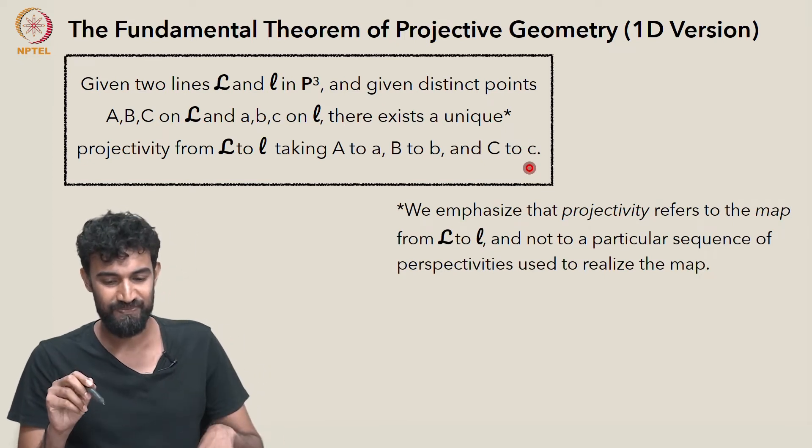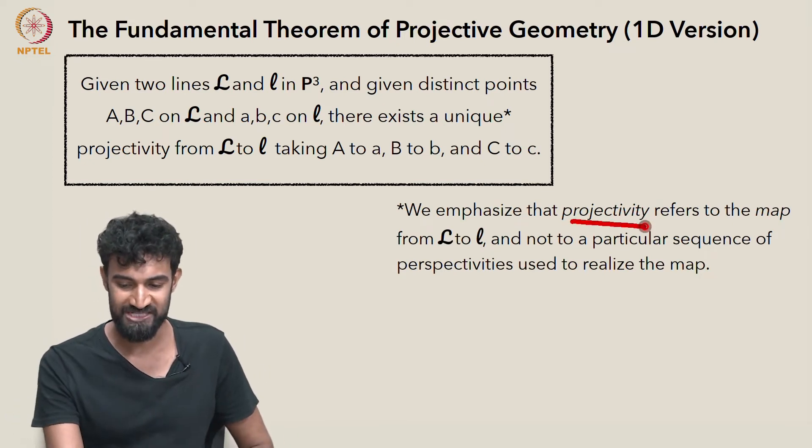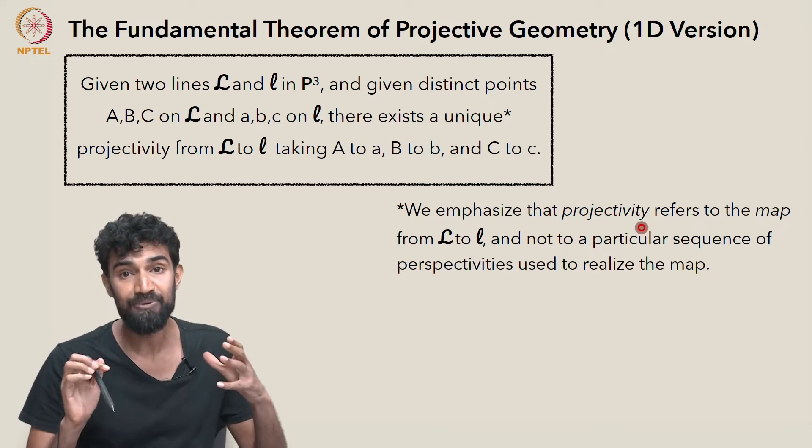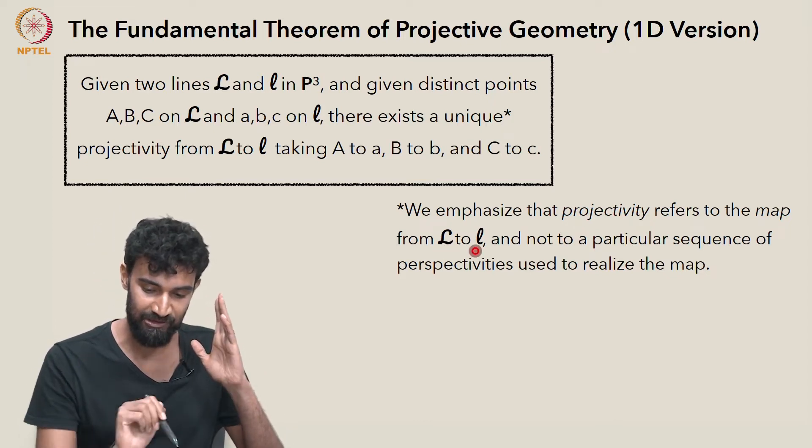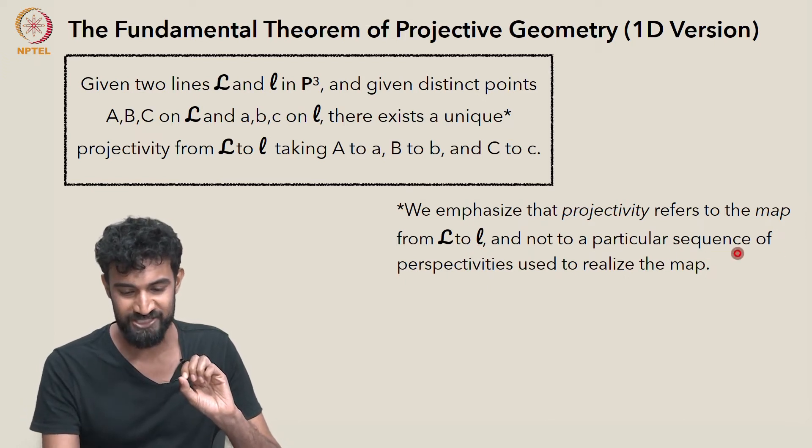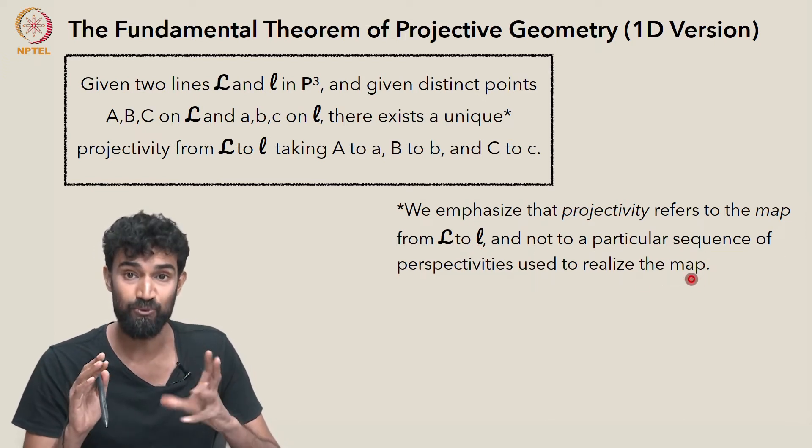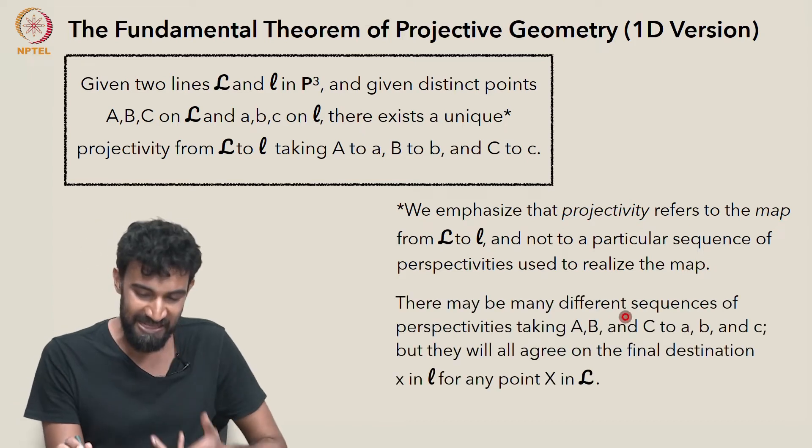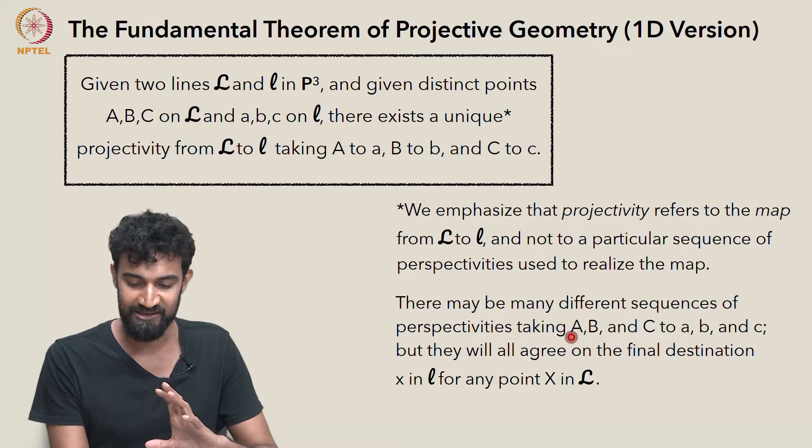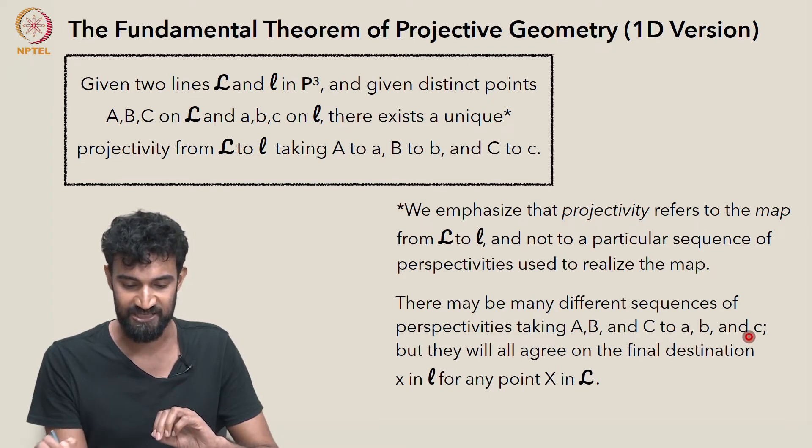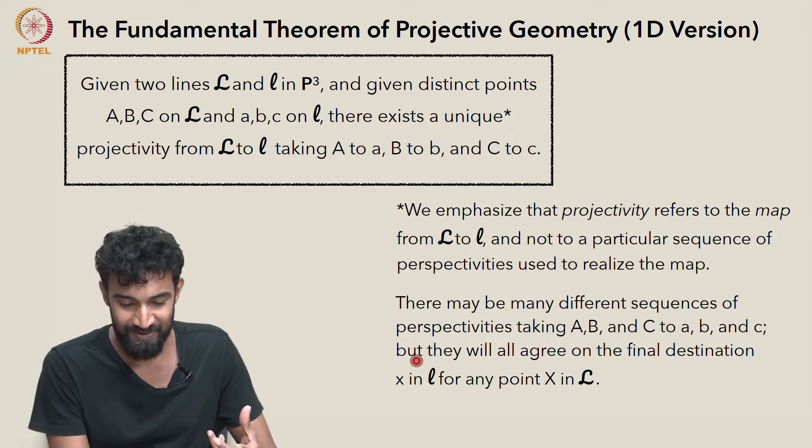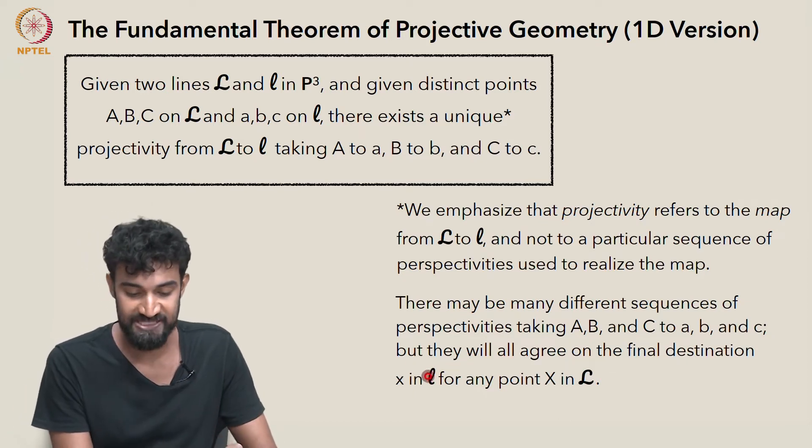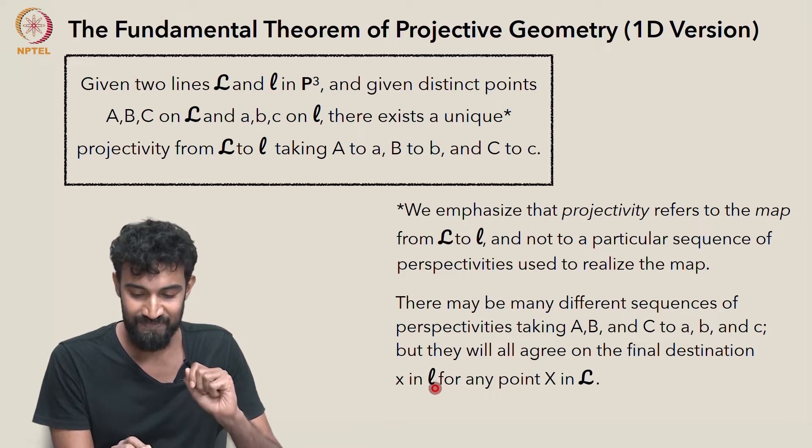So I want to emphasize here that when I say projectivity, I'm referring to the map from L to l, not to the particular sequence of perspectivities that were used to realize that map. There may be many different sequences of perspectivities that take A, B, and C to little a, little b, and little c. But in the end of the day, they're all going to agree on the final destination of X for any point capital X in L.